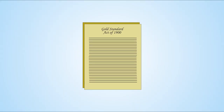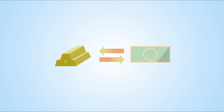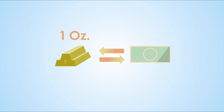13 years later, in 1861, the United States printed the first paper currency. At the beginning of the 20th century, the Gold Standard Act of 1900 made gold the only metal to be exchangeable for paper currency, and set the value of an ounce of gold at $20.67, which is almost $650 today accounting for inflation.